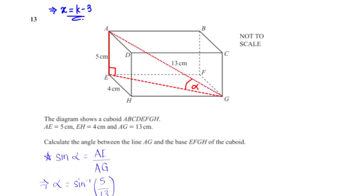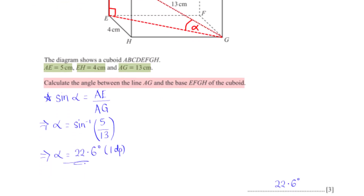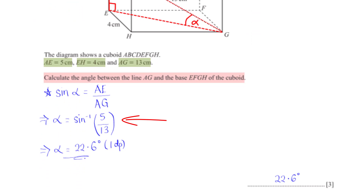The diagram shows a cuboid ABCDEFGH where AE equals 5 centimeters, EH equals 4 centimeters, and AG equals 13 centimeters. Calculate the angle between line AG and the base EFGH. Applying SOHCAHTOA, sine alpha equals AE over AG. So alpha equals the sine inverse of 5 over 13, giving alpha equals 22.6 degrees, correct to one decimal place.